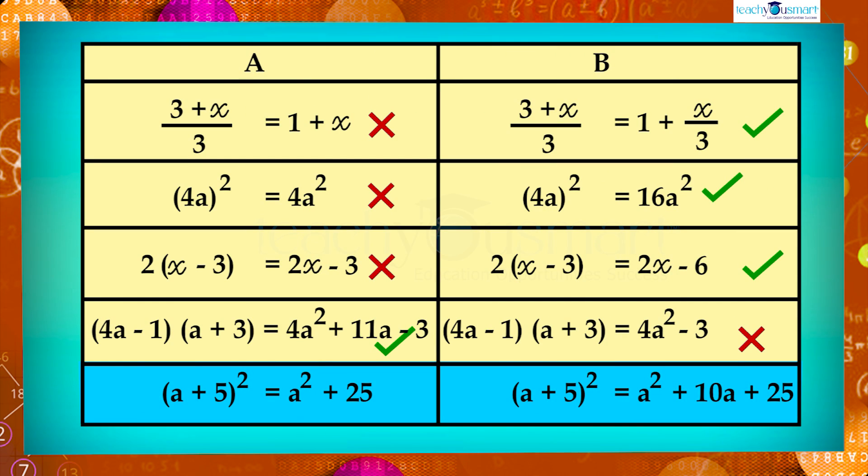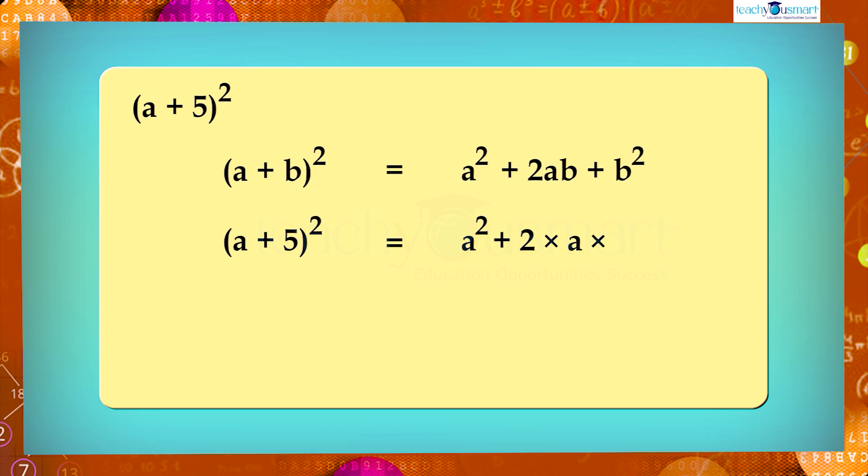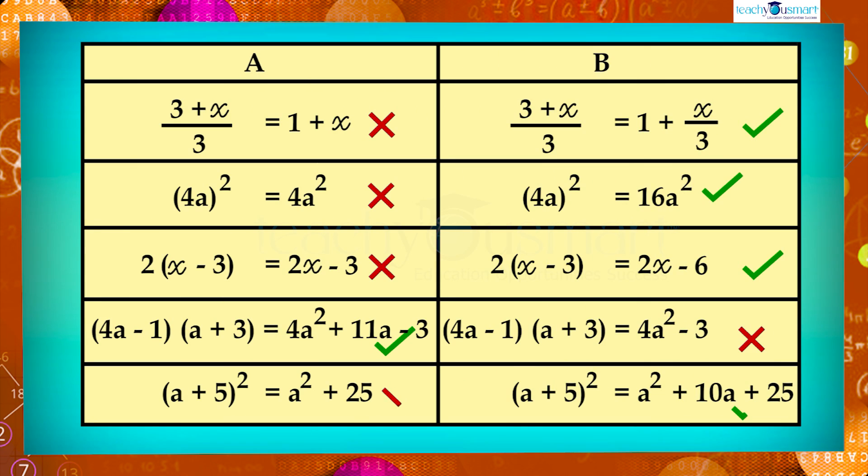And in a plus 5 the whole square, we can use the identity. A plus b the whole square equals a square plus 2ab plus b square. So a plus 5 the whole square equals a square plus 2 multiplied by a multiplied by 5 plus 5 square, equals a square plus 10a plus 25. So B is correct.